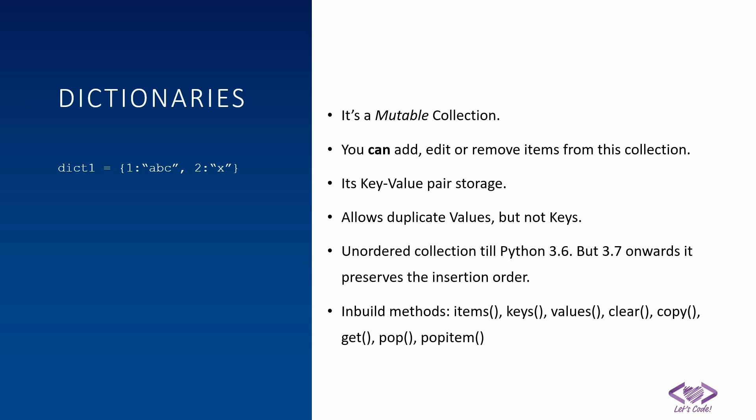Until Python 3.6, dictionary was an unordered collection, meaning there was no guarantee that items would be stored in insertion order. But from Python 3.7 onwards, Python made sure it will preserve the insertion order. So if you are inserting keys 1, 2, 3, 4 in that order, they will be stored and maintained in that same insertion order.